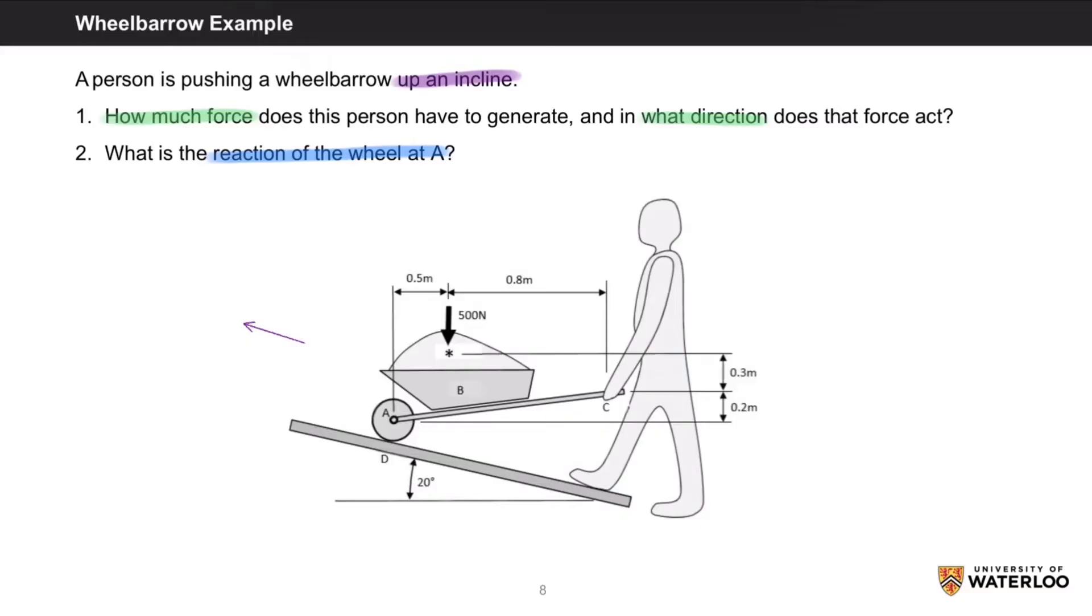Just to give a little bit of context, this end here, A, is a wheel, so it can roll up the ramp, which is inclined at 20 degrees. The person is holding the wheelbarrow at C and is exerting a force to push it up the ramp. And finally, we have this 500N force acting downwards, which is the weight of whatever the wheelbarrow is filled with.